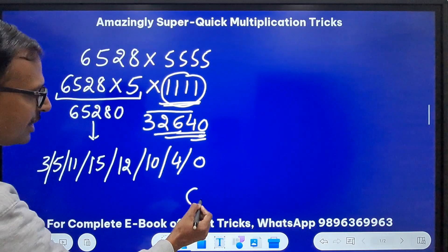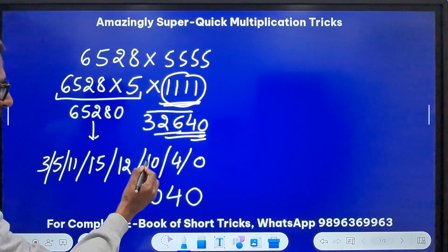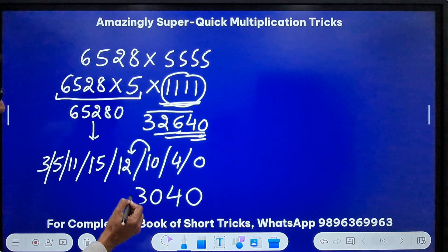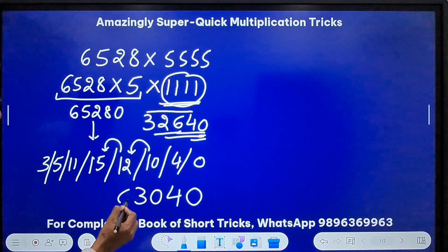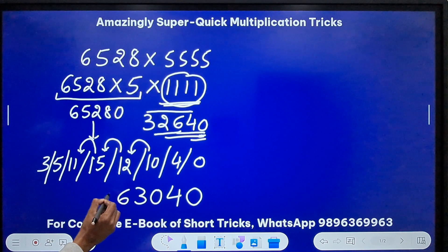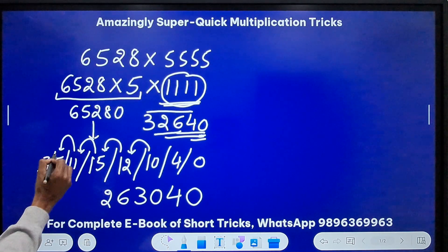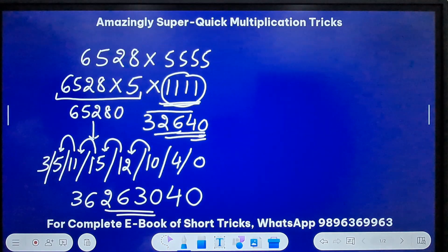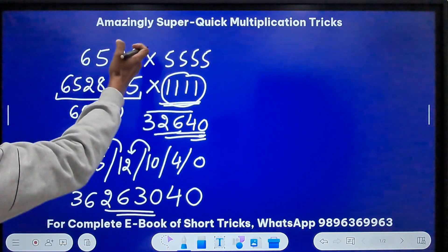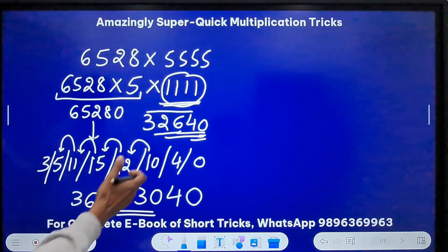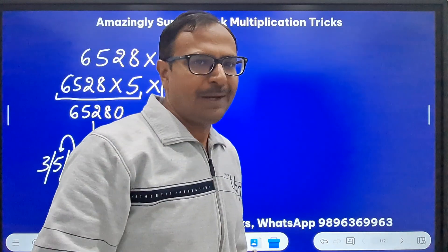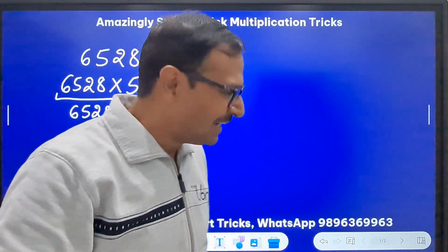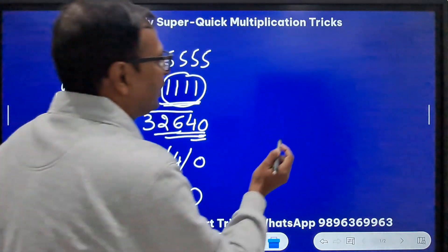Now start from here: zero, four, ten means zero one carry, thirteen means three one carry, sixteen means six one carry, twelve means two one carry, six and a three. Now pick up the calculators. 36263040 is the product of these two big numbers. It will never be wrong.